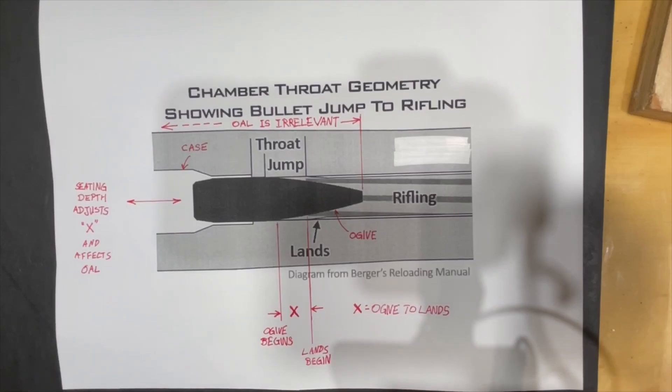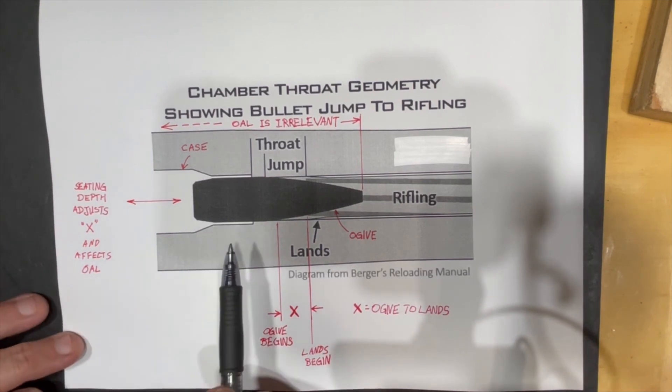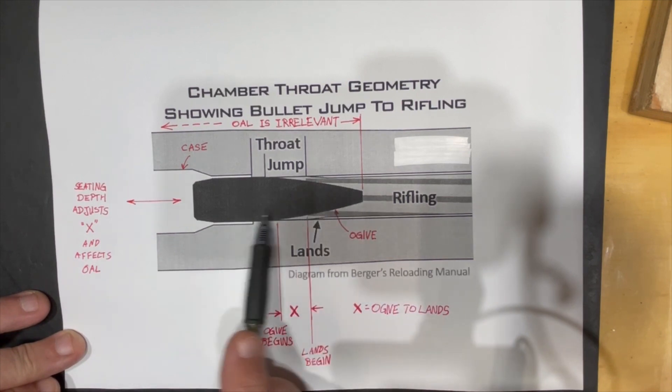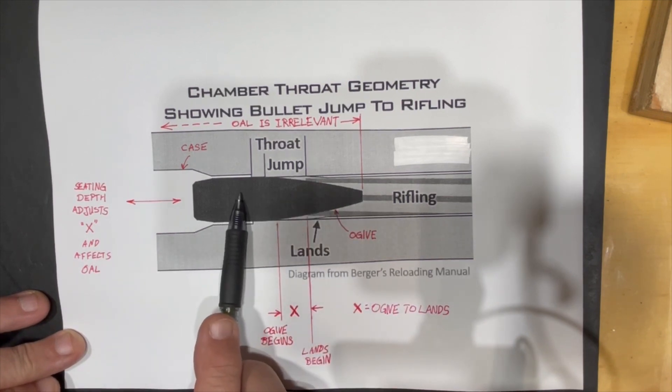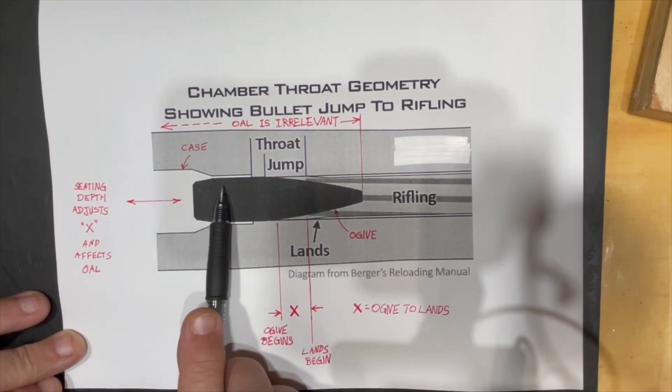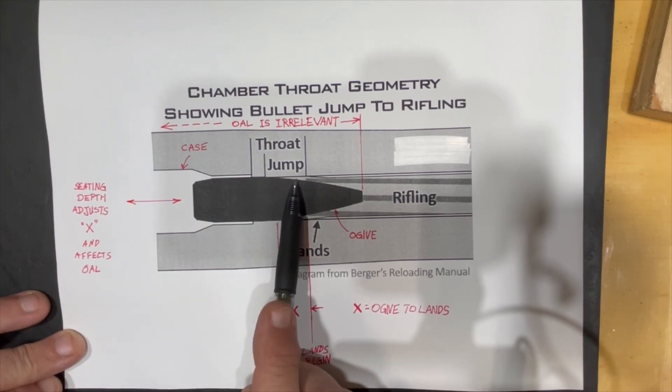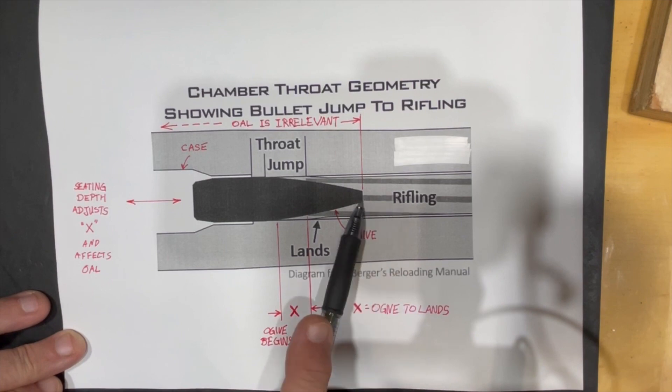This is a picture of your rifle chamber. This is the case. Here's the bullet, the projectile that sits in the case. And where the bullet sits, there's going to be a straight area here between the case mouth and where the rifling begins.